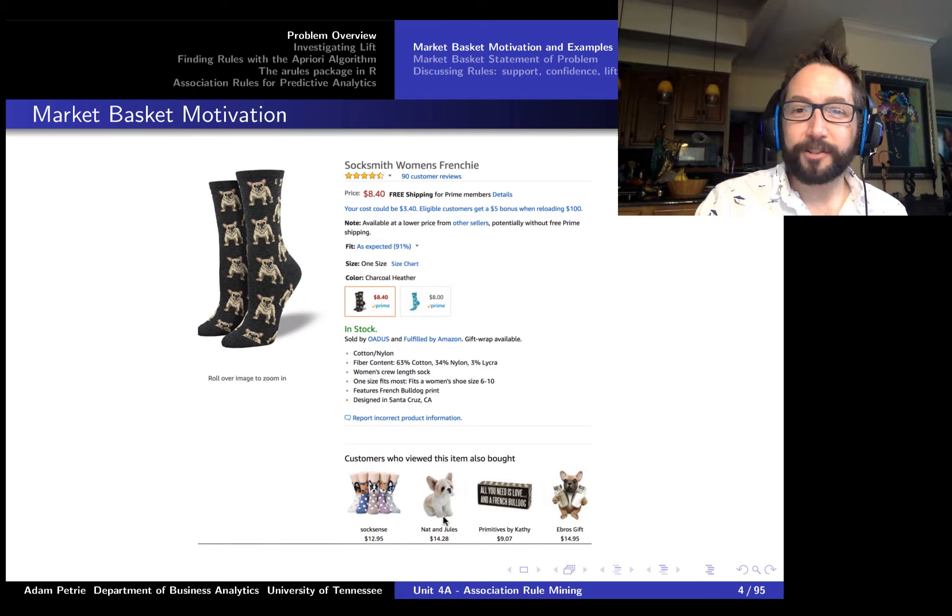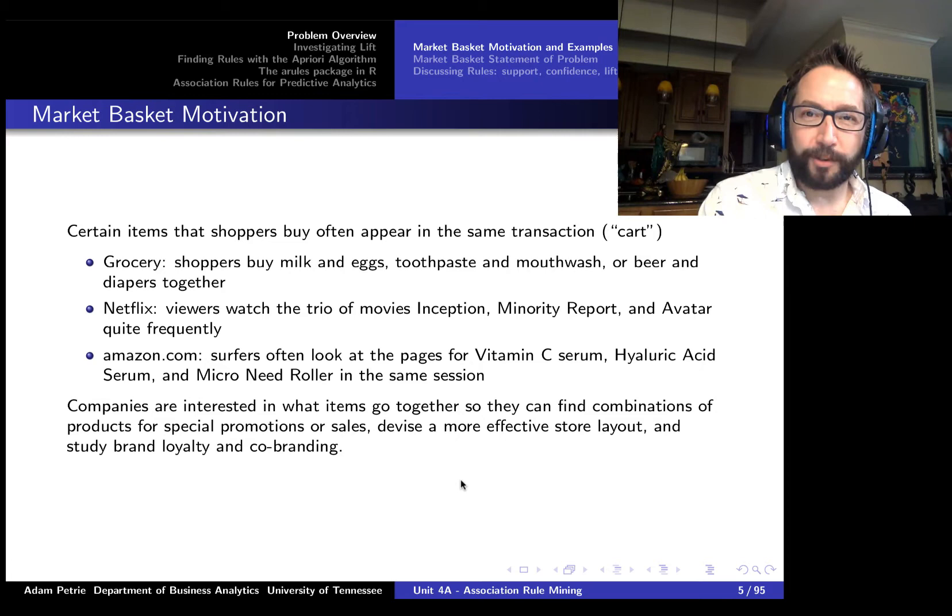So with Amazon, it's not just suggesting socks here. We got a plush animal. We have a cute little sign. All of these I would be interested in. So where did these suggestions come from? And what else can we actually apply these to?